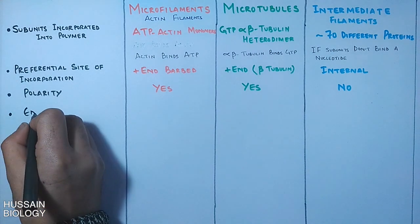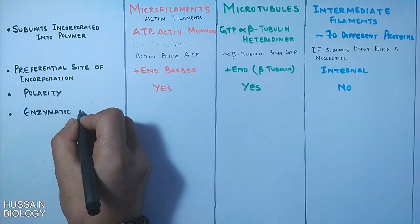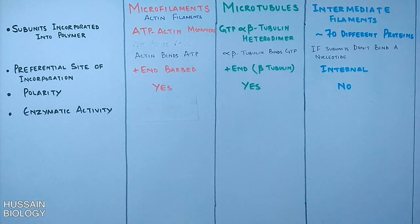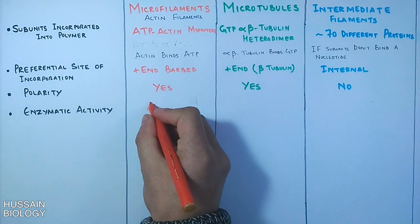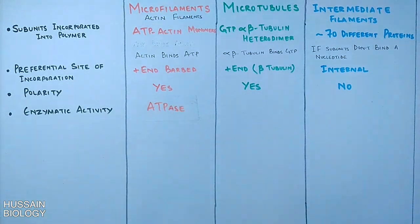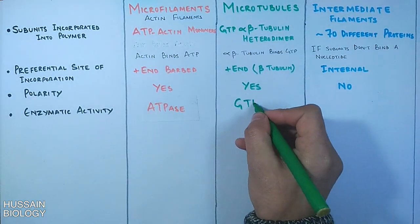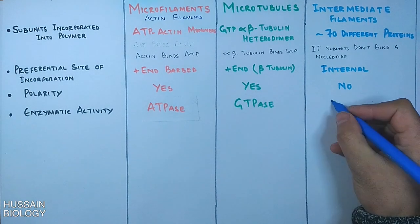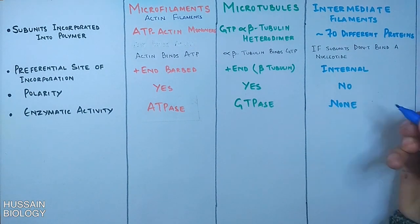Now let's look at the enzymatic activity of these proteins. Microfilaments have ATPase activity, whereas microtubules have GTPase activity, and intermediate filaments do not show any enzymatic activity.